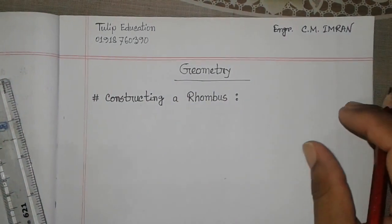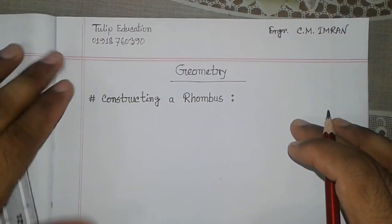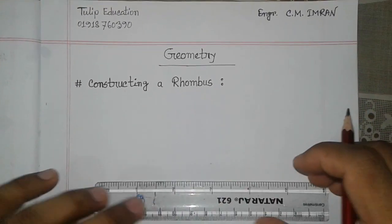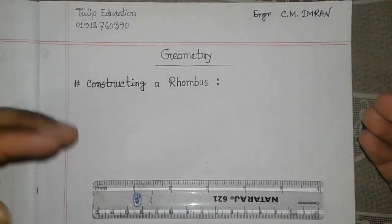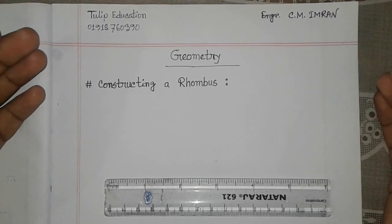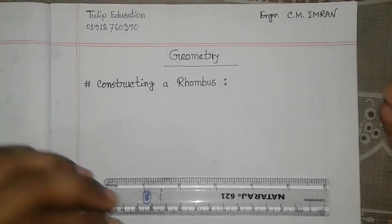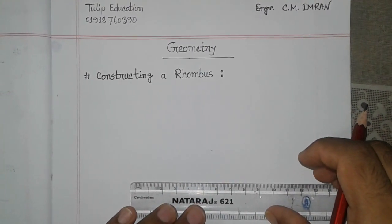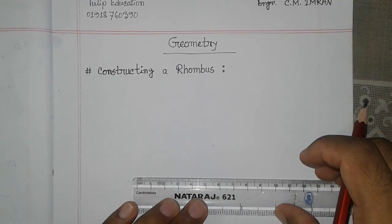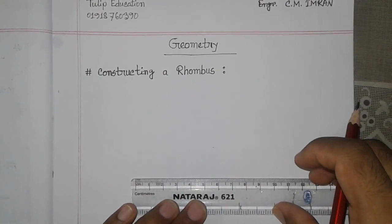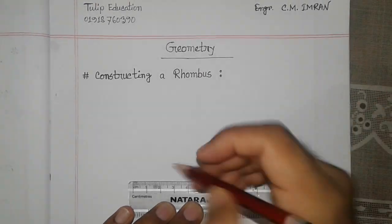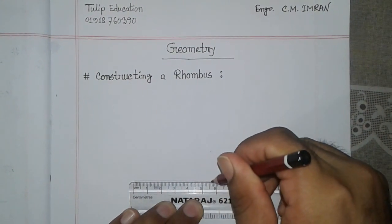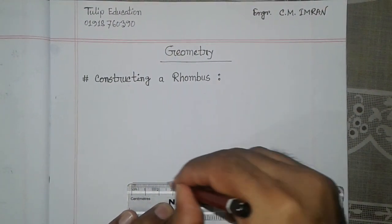First of all we have to select a measurement if it is not given to you. We have to take a line which may be 4 cm, 5 cm, 6 cm, or anything else. I decided that I will take 6 cm. So first of all I have to draw a 6 cm line. From here to here is 6 cm.